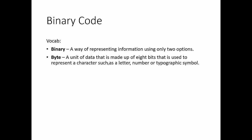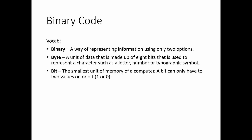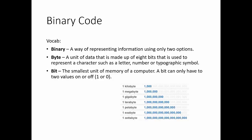A byte is a unit of data made up of eight bits — those ones and offs — that can be used to represent a character such as a letter, number, or typographical symbol. A bit is the smallest unit of memory and can only have two values: either on or off, one or zero. On the slideshow: a kilobyte is 1,000 bytes; a megabyte is 1 million bytes; a gigabyte is 1 billion bytes; a terabyte is 1 trillion bytes; and then you have petabytes, exabytes, and zettabytes.